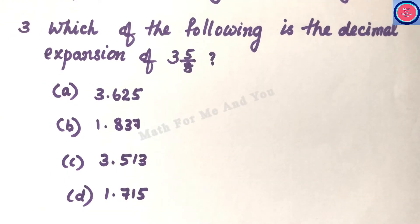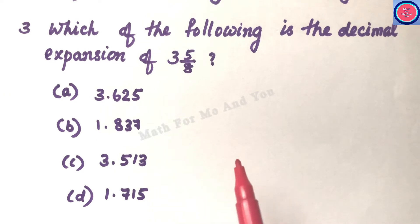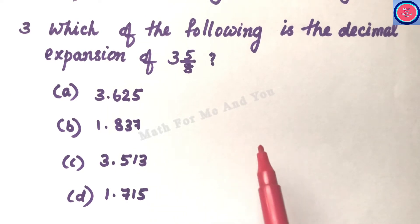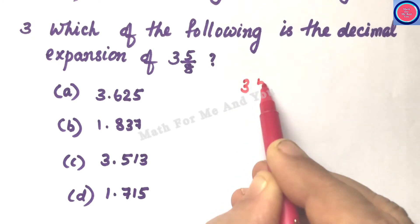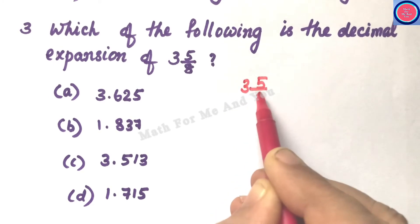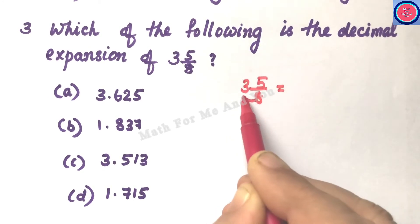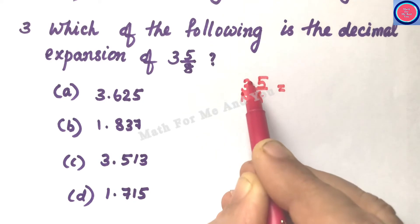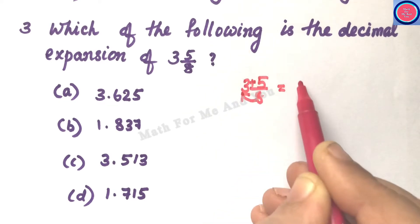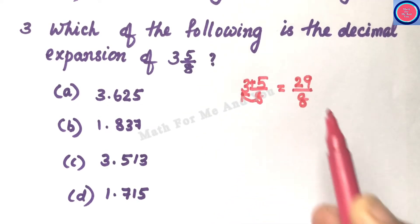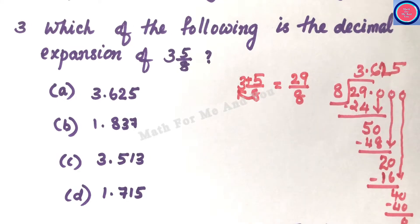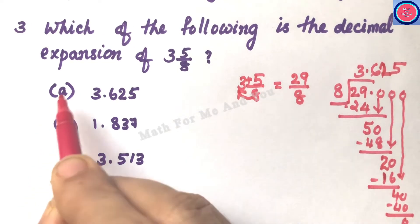Q3: What is the decimal expansion of 3 and 5/8? First, convert to an improper fraction: 3 and 5/8 = (8×3 + 5)/8 = 29/8. Then divide 29 by 8, which gives 3.625 — that is option A.